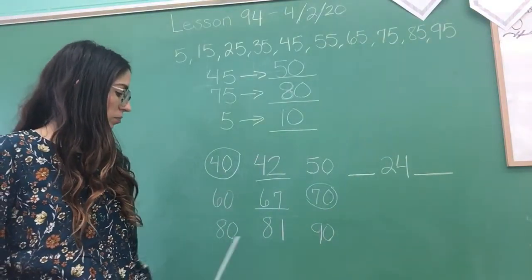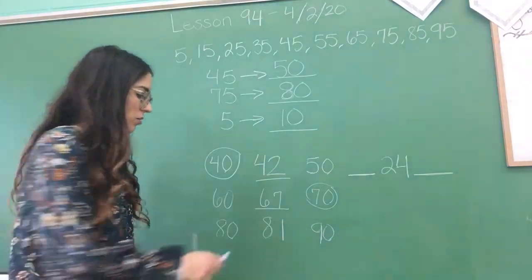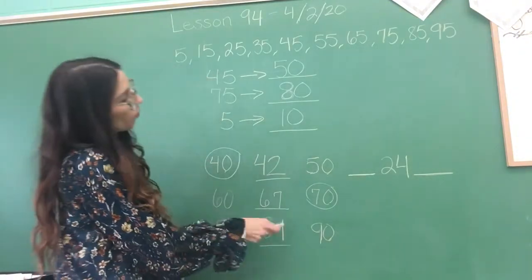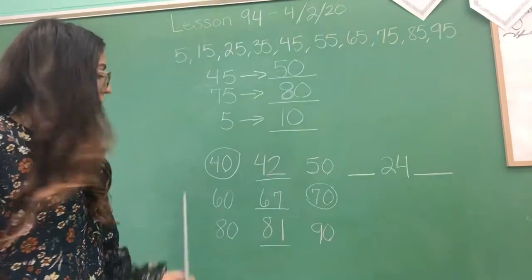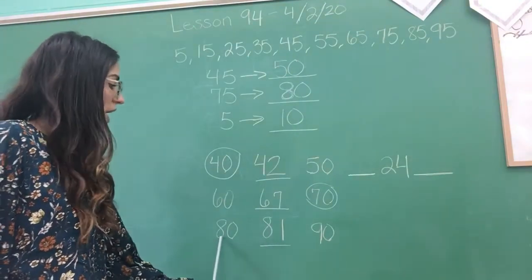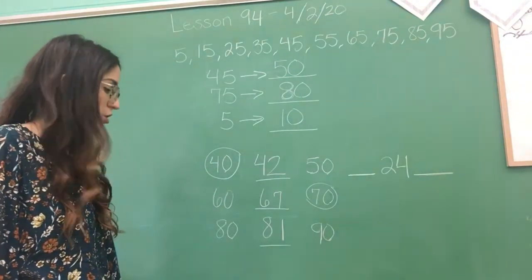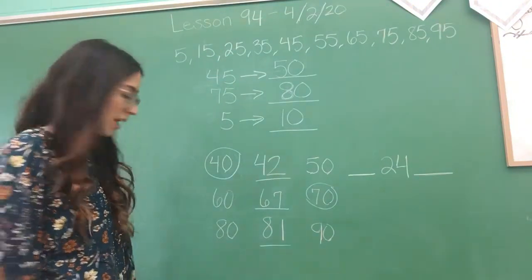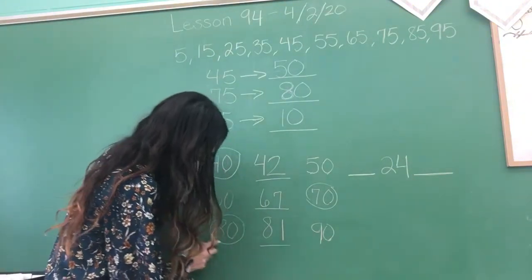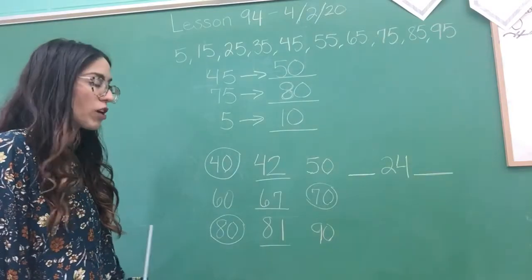And then the last one, we have 81, right? We have 81 here. So is 81, is it closer to 80 or is it closer to 90? Which one is it going to be? 80. Very good. 80. Excellent job.